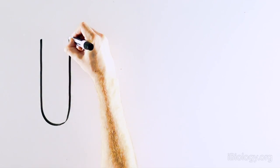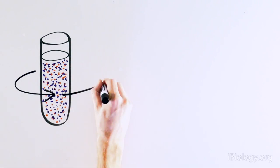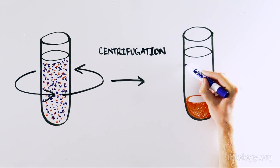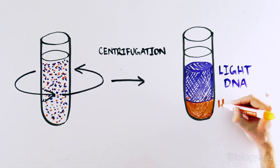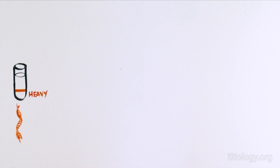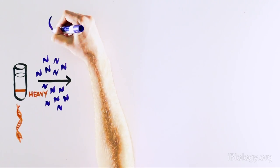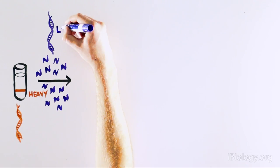They used centrifugation, which can separate things according to their weight. Initially, all of the DNA in the cell was heavy, and was at the bottom of the tube, since it was grown in heavy nitrogen. Then, they started growing these cells in the presence of light nitrogen. So all of the DNA made in subsequent cell divisions would be lighter.